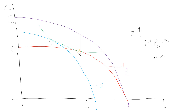An increase in wage means that the opportunity cost of leisure is going to increase, so there's a substitution effect which means a decrease in leisure — we move towards the left, from point X to point Y. This represents the substitution effect. On the other hand, whenever there is an increase in wages there is also an income effect, which means consumption is going to increase and there's also going to be an increase in leisure. These are the opposing effects we see whenever there's an increase in z.